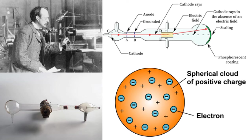The discovery was made when Thomson conducted an experiment with a cathode ray tube. When an electrical current was passed through, glowing material could be seen. When he put two electrically charged plates on opposite ends of the tube, the light was bent toward the positive plate. Thomson thought that the atom looked like raisin pudding — a ball with negative electrons clumped on it.